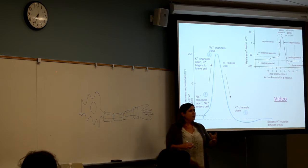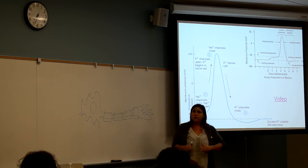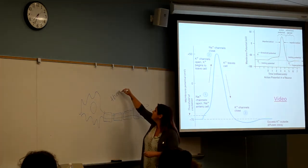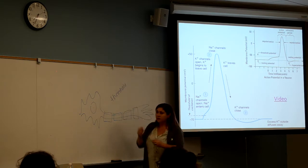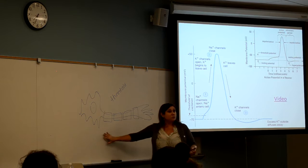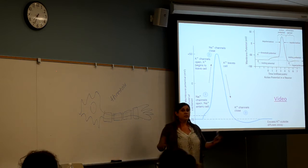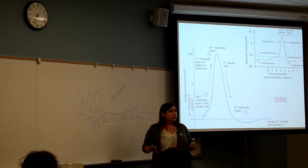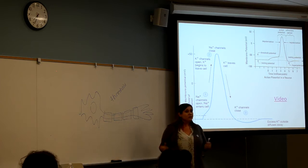When the male or the neuron reaches threshold, it's called the same for both, stuff is going to happen. For action potential, if you reach threshold, an action potential is going to happen. If the male anatomy reaches threshold, an orgasm is going to happen. It's an all-or-none process.